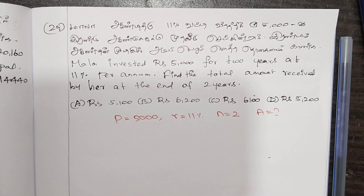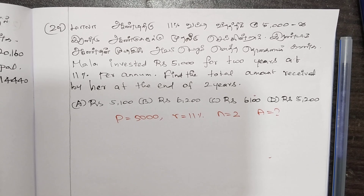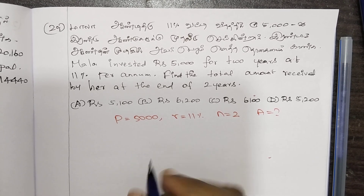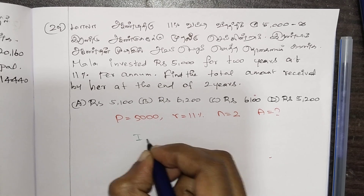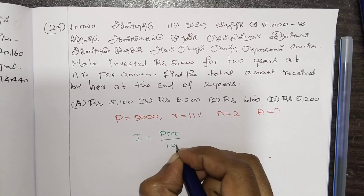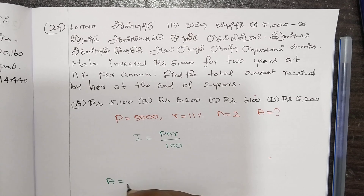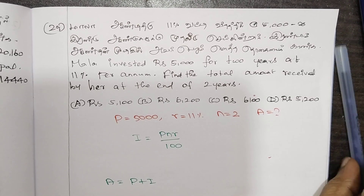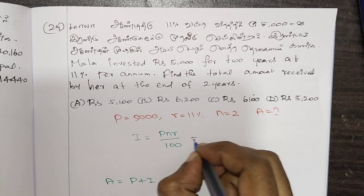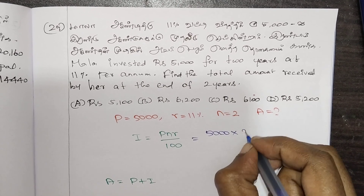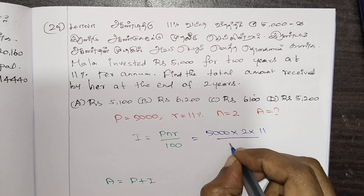In this explanation video, we will review what we have done. The formula is I equal to PNR by 100, and A equals P plus I. These are the two key formulas for simple interest problems.